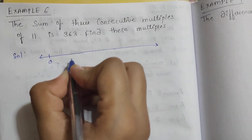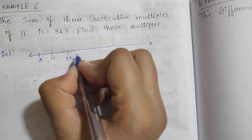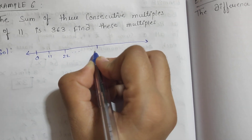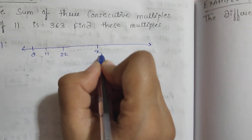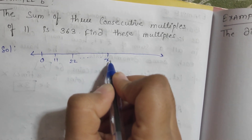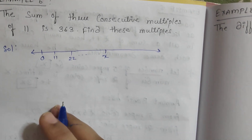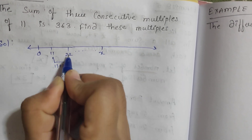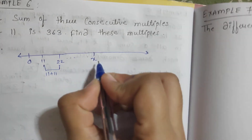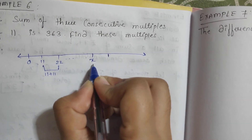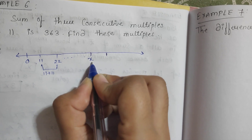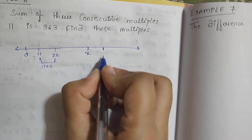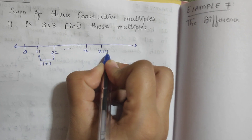Let us represent this on a number line. Starting from 0, we have 11, 22, and so on. Let us consider one unknown multiple as x. Since each next multiple of 11 is obtained by adding 11, the next consecutive multiple would be x plus 11.